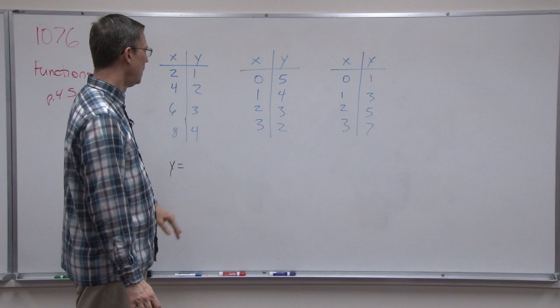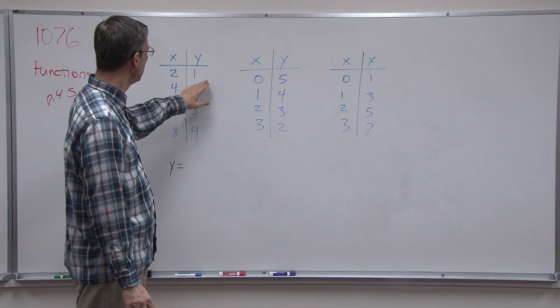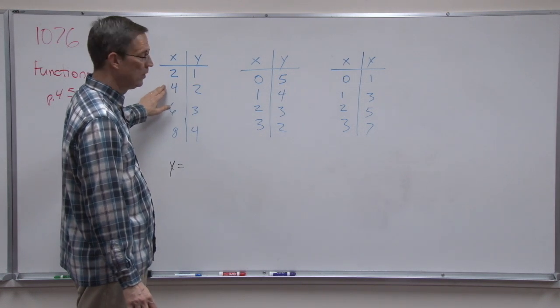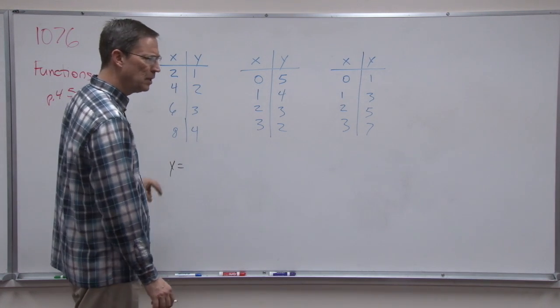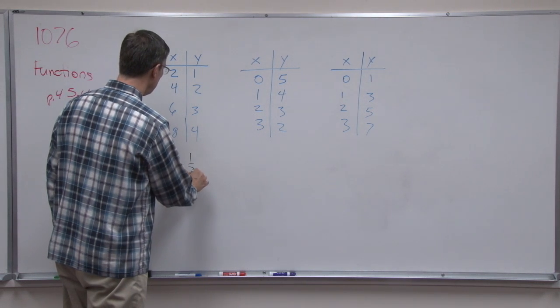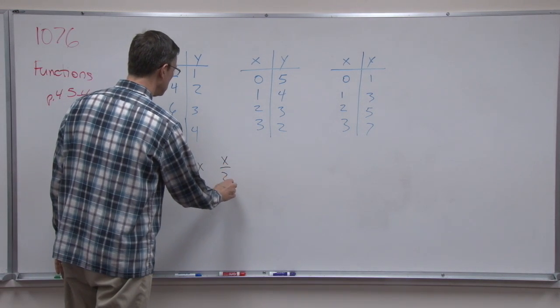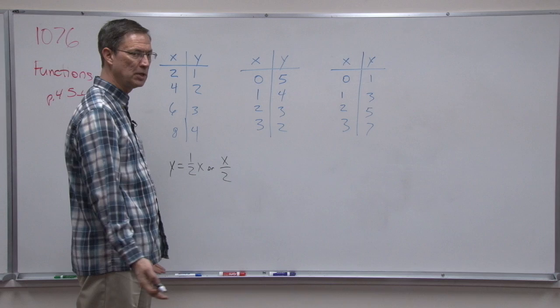Let's think about this. Is there another way to get from 2 to 1 or from 4 to 2, 6? Are you seeing what I'm seeing? I think all of these y values are half the value of x. Let's see if this works. So if I take and multiply 1 half times x, now that would be the same as saying x over 2. Same thing.